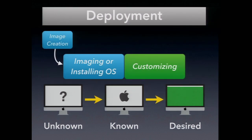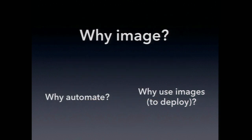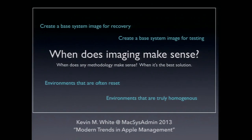Breaking that down, when we talk about imaging, we want to talk about two things: image creation, because you have to create the image first, and then what some people call imaging, or just deploying an image. There are other methods — you don't have to image anymore. You can just install an OS and be done with it, using basically a package made out of the OS X installer, assuming you're using 10.7 and later, and then throw anything else you want into the customizing phase. What we're focusing on today is: why do we use images for deployment, and once we've made that choice, what techniques can we use?